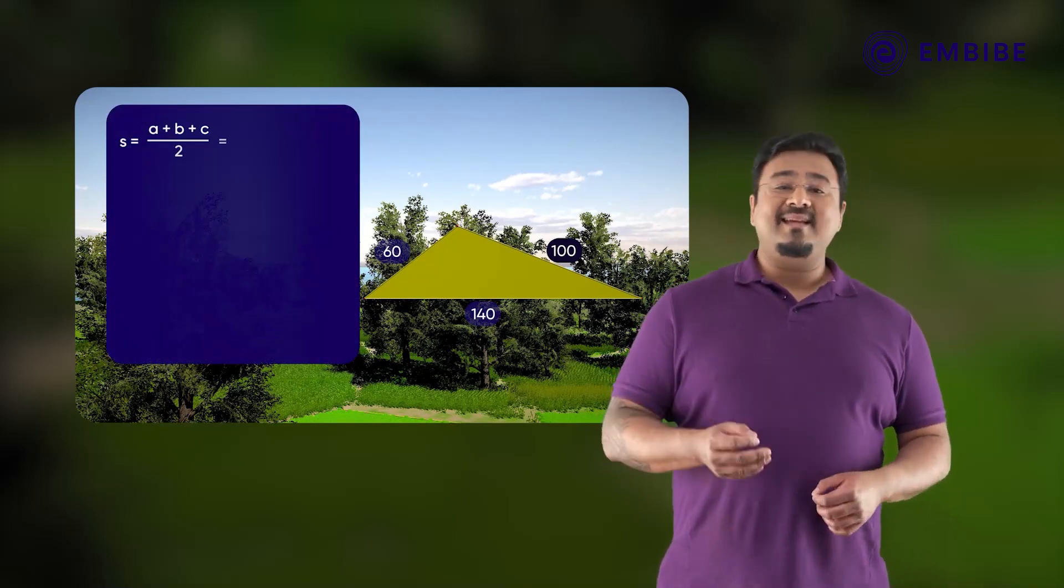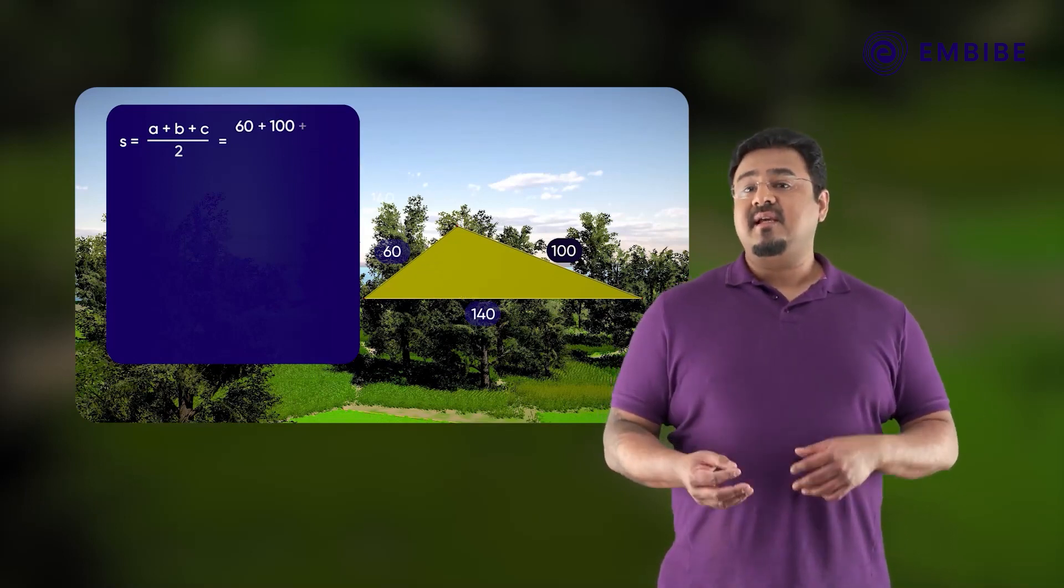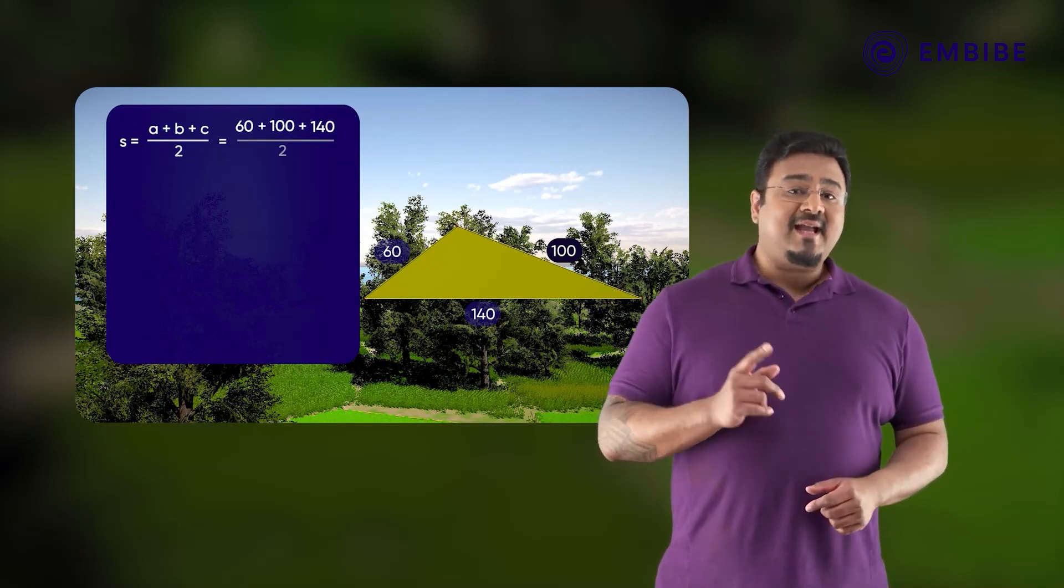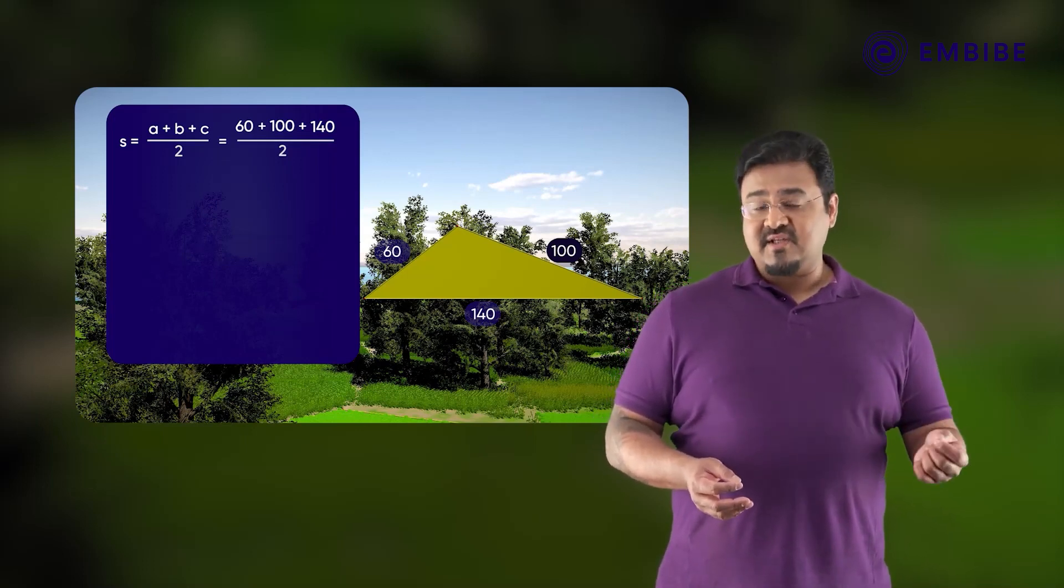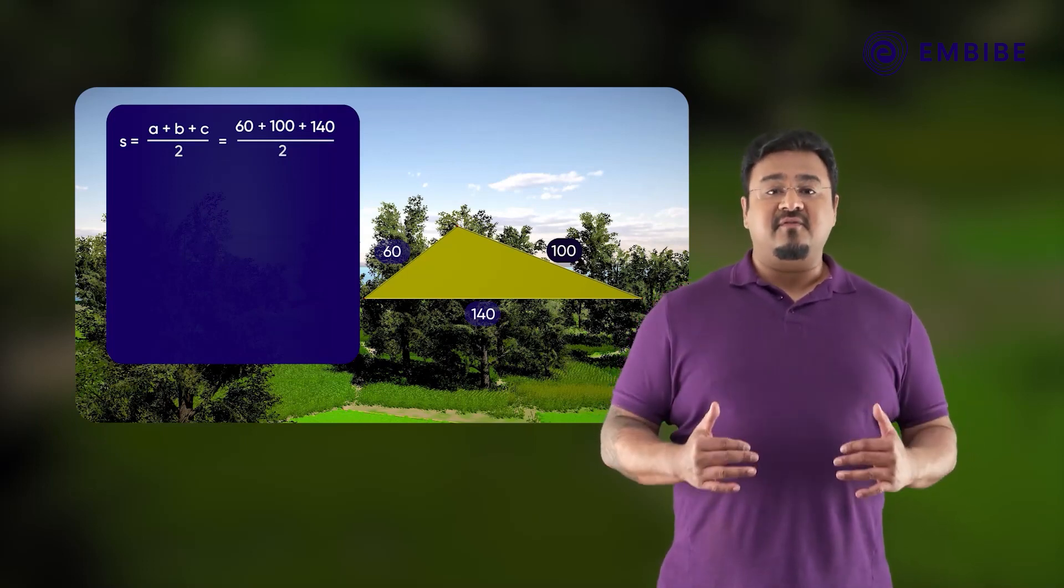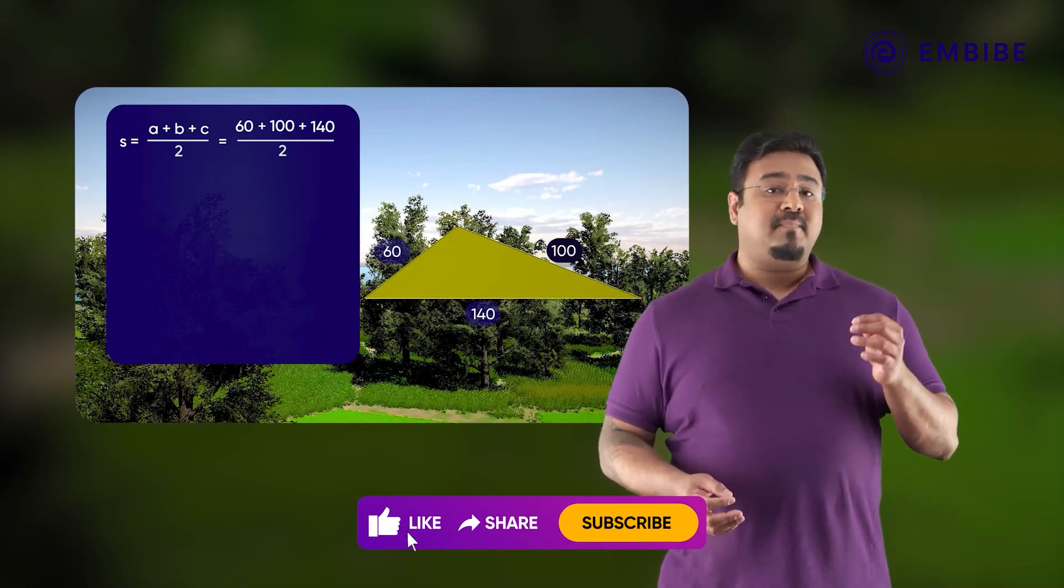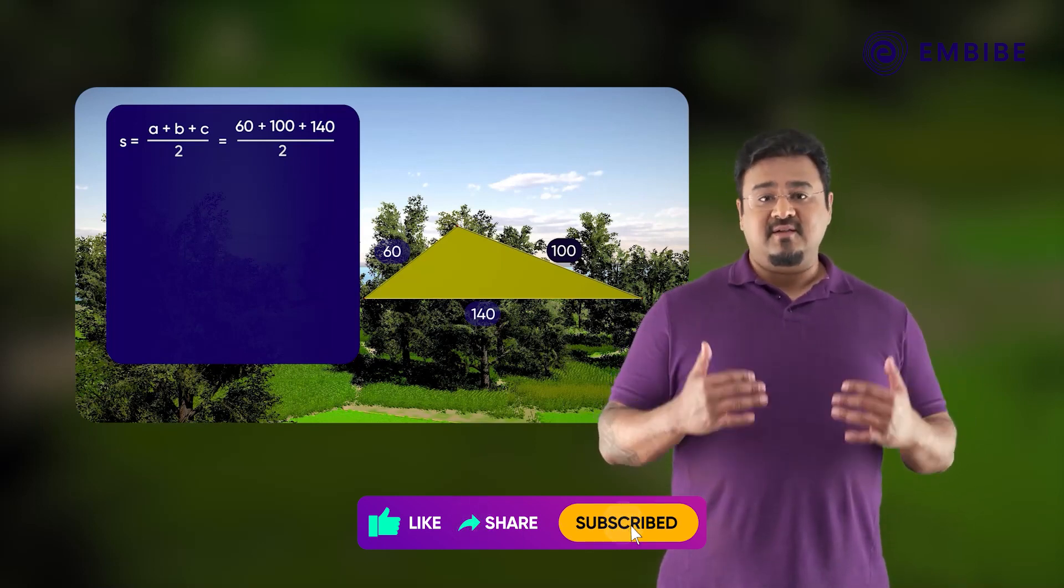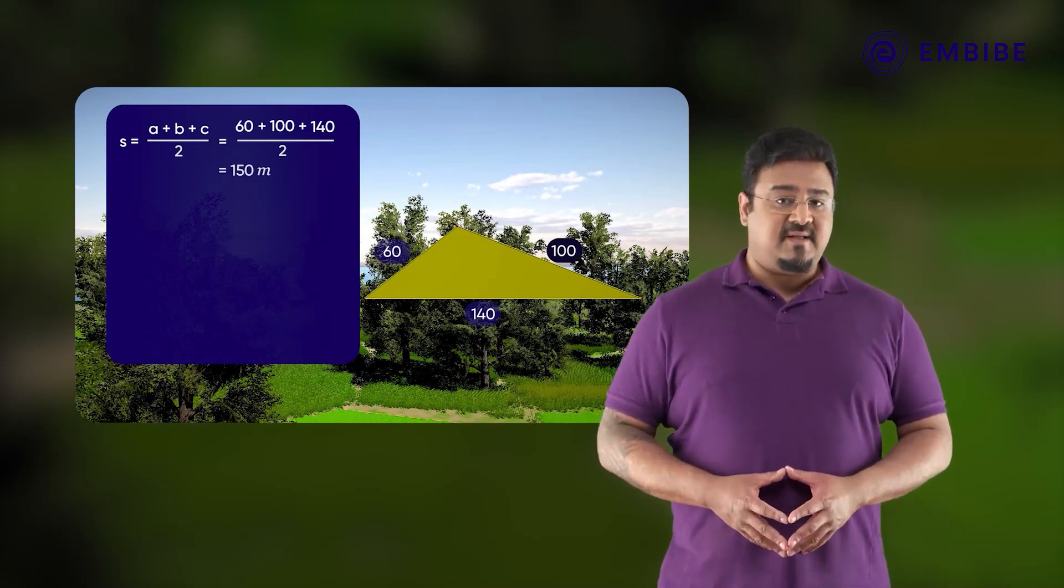Here, A is equal to 60, B is equal to 100, and C is equal to 140. Therefore, S is equal to A plus B plus C whole divided by 2, which is equal to 60 plus 100 plus 140 whole divided by 2, which is equal to 150 meters.